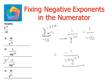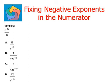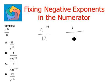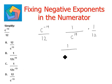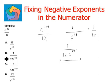Let's look at the next example: simplify c to the power of negative 19 divided by 12. As per the rule, we just move that part of the expression with the negative exponent to the denominator, and the 1 over 12 remains as it is. Rearranging gives us 1 divided by 12 c to the power of 19 as the final answer, which matches option B.